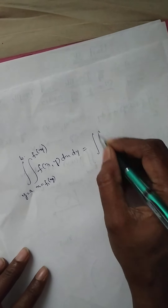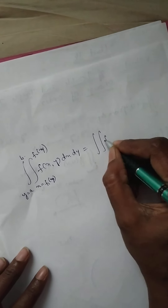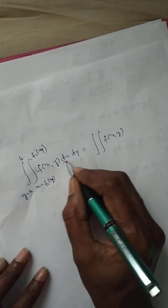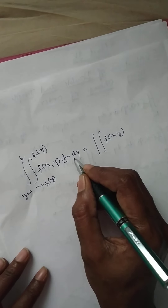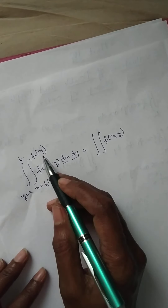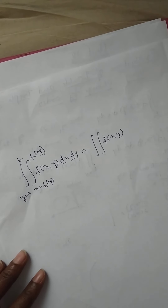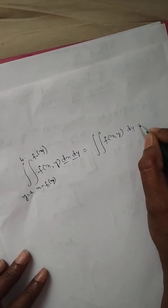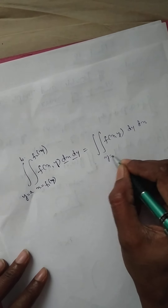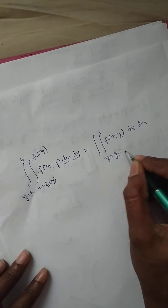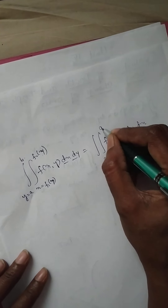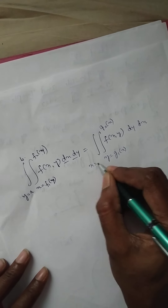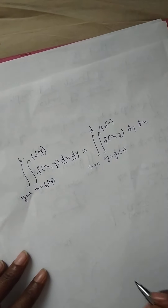So we change it to a function of x and y where the order of integration is dx dy with variable limits first and then with respect to constant limits. We change it as dy dx, where y is a variable limit as a function of x, and x is a constant limit.